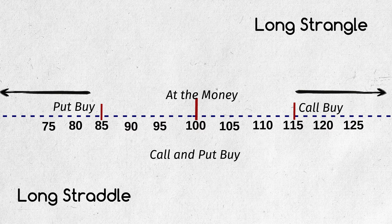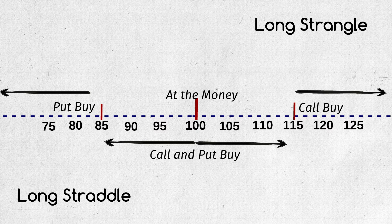If there is huge movement in one side, there will be loss in the premium of one trade which is covered by the profit of another trade. But compared to strangle, it needs more capital, that is margin, as at the money contracts will be more expensive than out of the money.